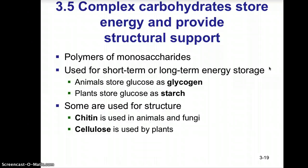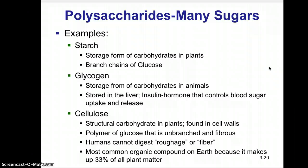Complex carbohydrates are storage forms of energy in living things but also provide structural support depending on which polysaccharide you're discussing. Animals store glucose in the form of glycogen; plants store glucose as starch. Some polysaccharides are used for structure, such as chitin in animals and fungi, and cellulose, the structural polysaccharide found in plants. Starch is often stored in the central vacuole and is branched chains of glucose. Glycogen is stored in the liver, and insulin is the hormone that controls blood sugar uptake and release.